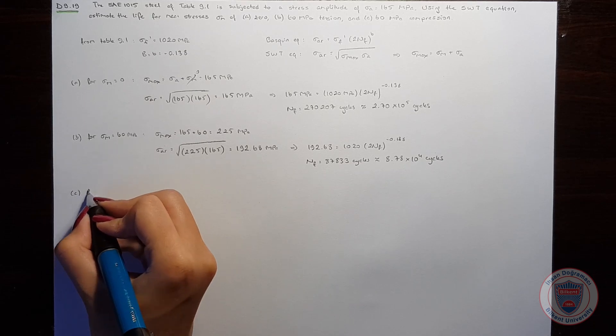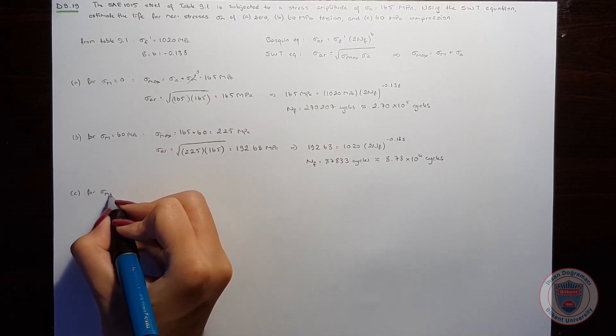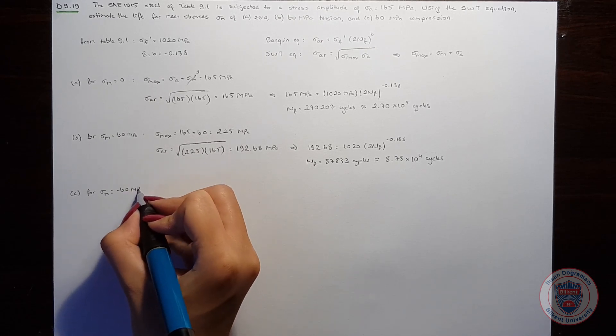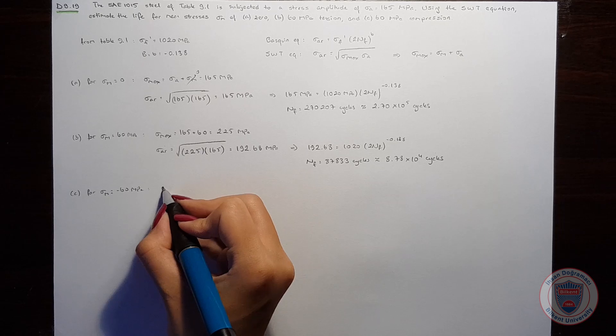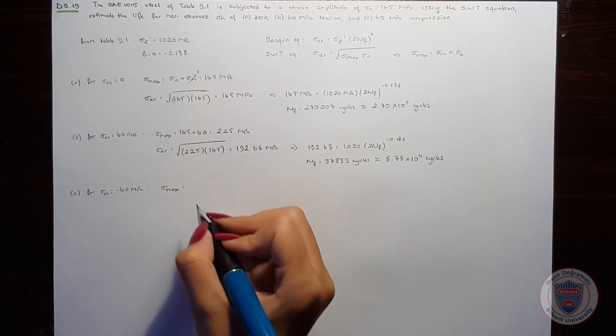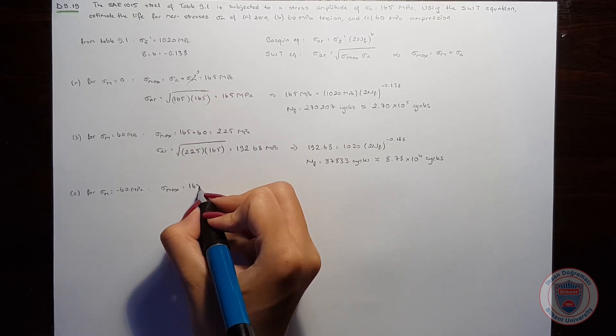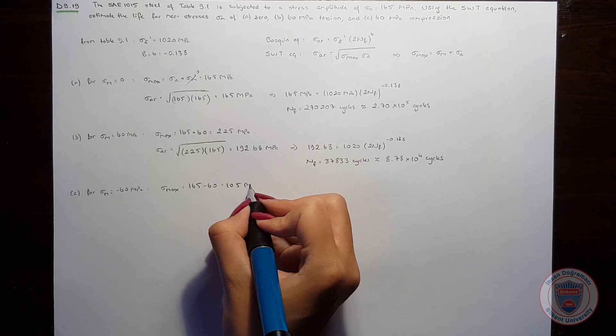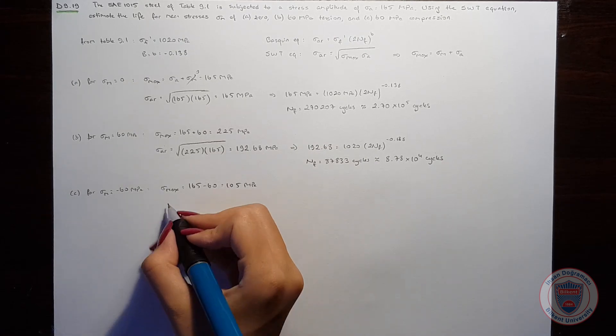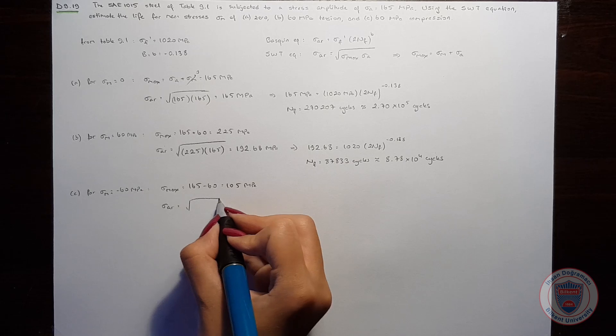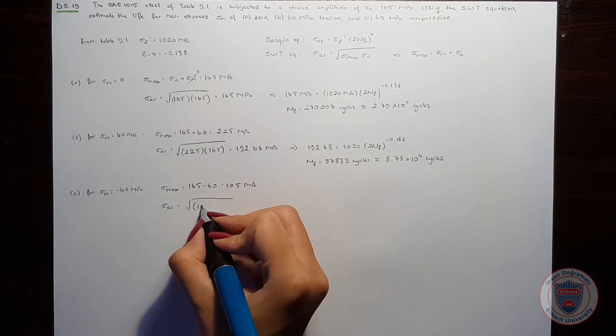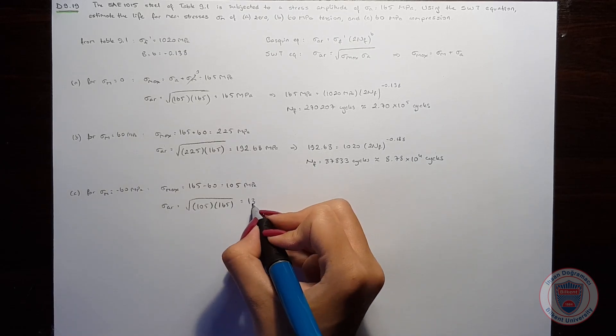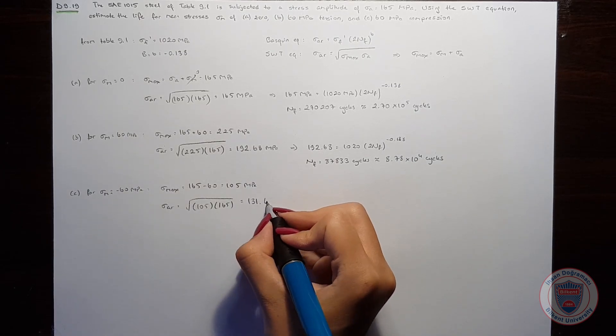Finally, in part C, we will consider a mean stress of minus 60 MPa because it is compression. So sigma max will be 165 minus 60 and it is 105 MPa. So sigma AR will be the square root of 105 times 165 and it is equal to 131.62 MPa.